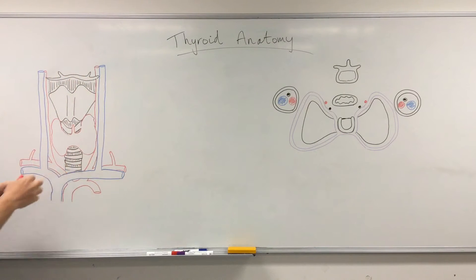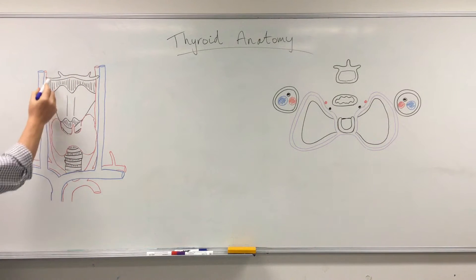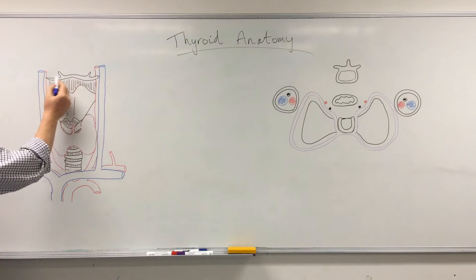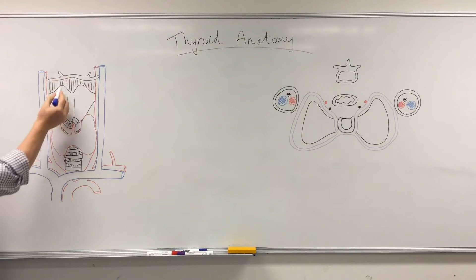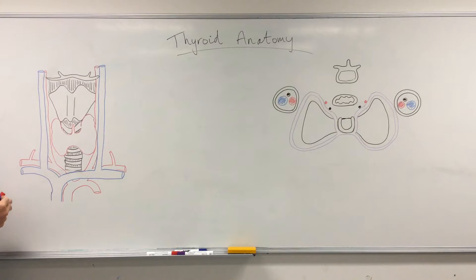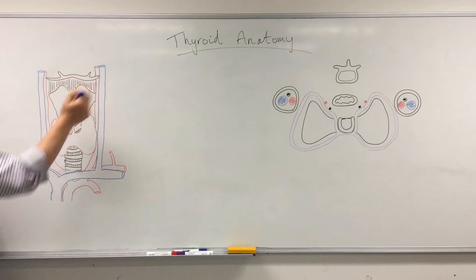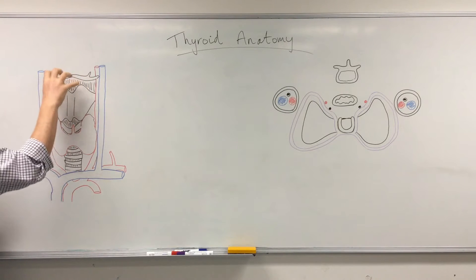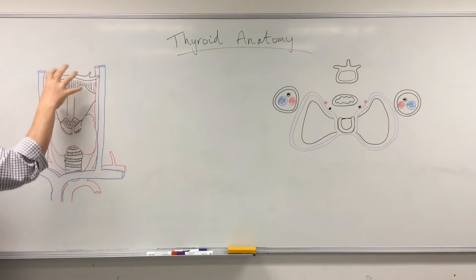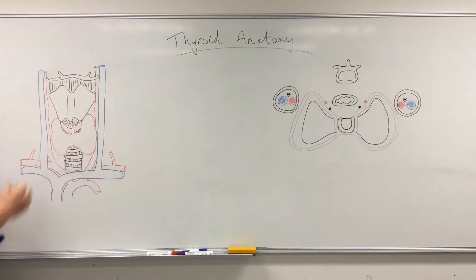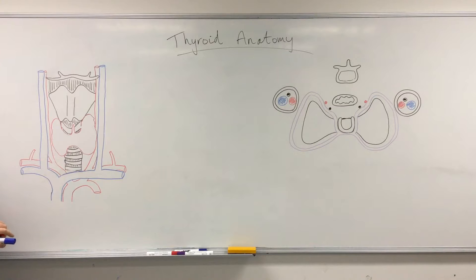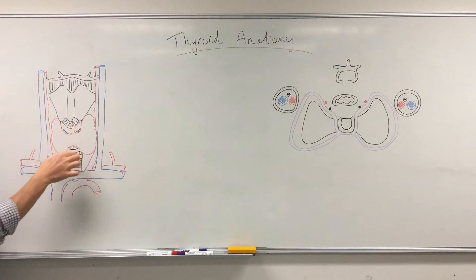Let's get our bearings to begin with. Most superiorly we have the hyoid bone sitting at the top, and just below it is the thyroid cartilage. Between them is the thyrohyoid membrane, which anchors the hyoid and thyroid together as one unit. Moving inferiorly, the next cartilage is the cricoid cartilage, and then we move into the trachea, with rings moving down as we go into the thorax.